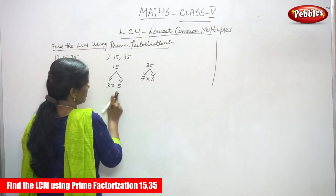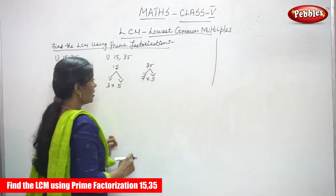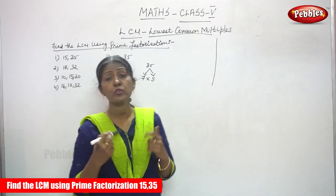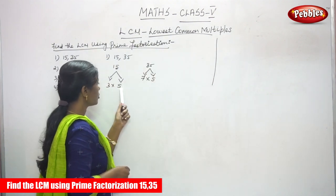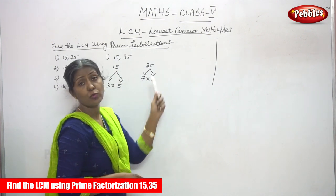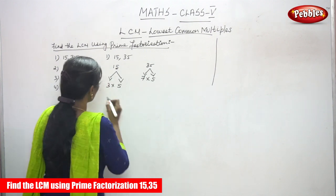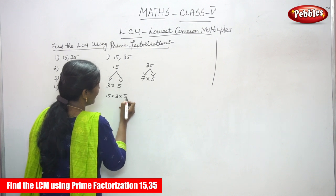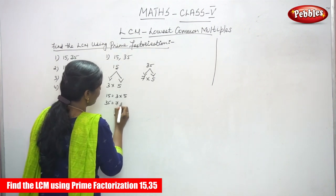These are the factors of 15, and these are the two factors of 35. So, 15 is equal to 3 into 5 — these are the two factors of 15. And 35 is equal to 7 into 5 — these are the two factors of 35.